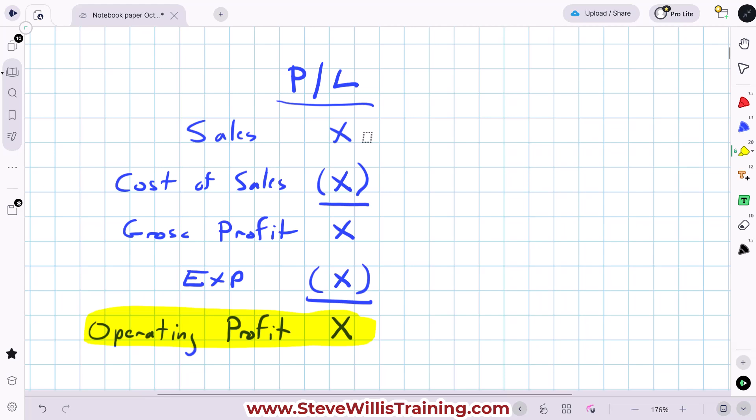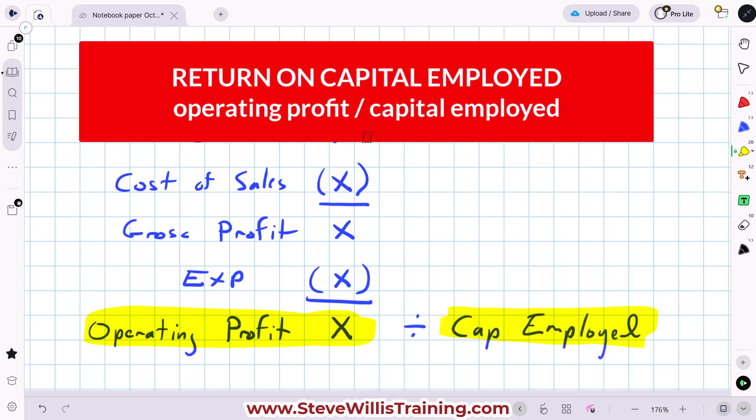the full investment in our business. So what profit did our business deliver? This. How much did we invest to earn that profit? Our debt plus our long-term debt plus our equity.